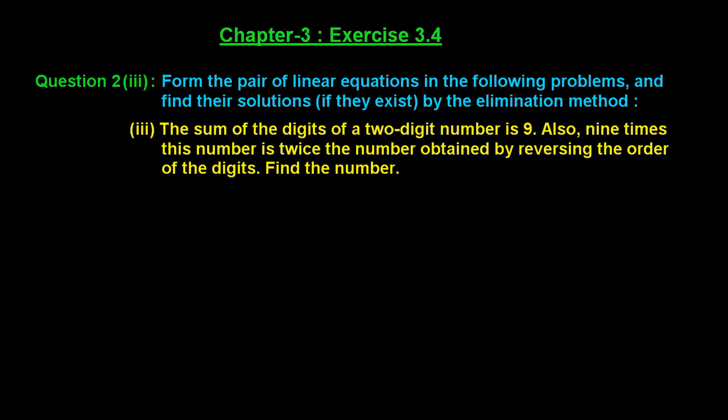Welcome friends. Let us solve the third part of question number 2 of exercise 3.4 of chapter 3. The question says: form the pair of linear equations in the following problem and find their solution if they exist by elimination method. The problem is: the sum of the digits of a 2-digit number is 9. Also, 9 times this number is twice the number obtained by reversing the order of the digits. Find the number.